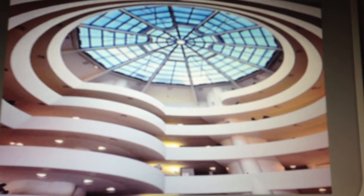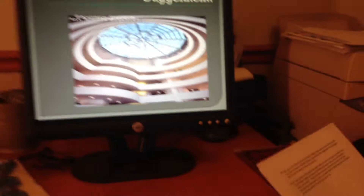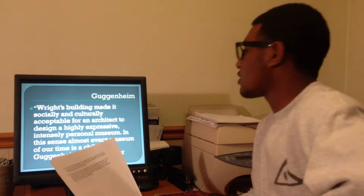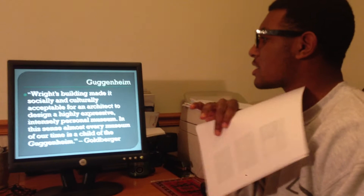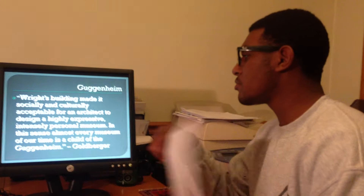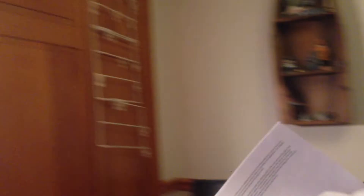There are about four of these long columns along the Guggenheim that hold each of the ramps together so they can be stable. I want to end with this quote because it really showed how he pioneered for later companies: "Wright's buildings made it socially and culturally acceptable for an architect to design a highly expressive, intensely personal museum. In that sense, almost every museum of our time is the child of the Guggenheim." — Quote by Goldberg. Now I'm going to hand it over to Vic.